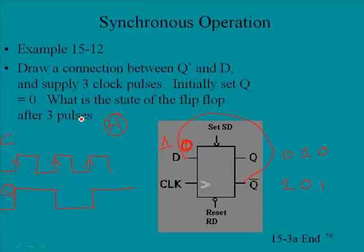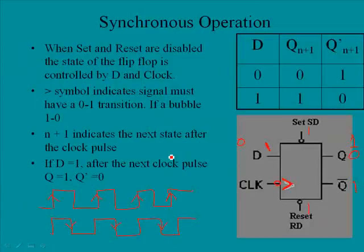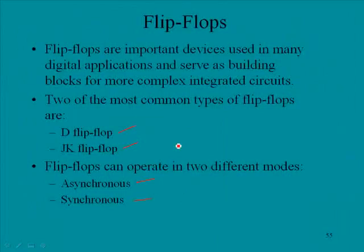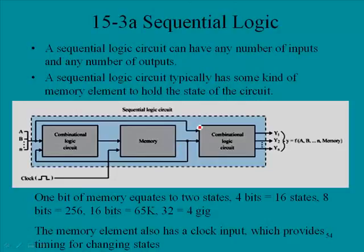This is one use of a D-type flip-flop — wiring Q-not back to D — just to show how these work in synchronous operation. In this section, we looked at synchronous operation, the inputs and outputs, and asynchronous operation using set and reset — remembering that the bubbles indicate a low activates the condition. We also briefly introduced flip-flops and the subject of sequential logic.